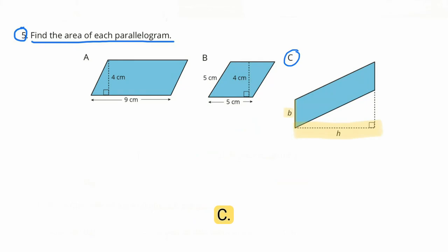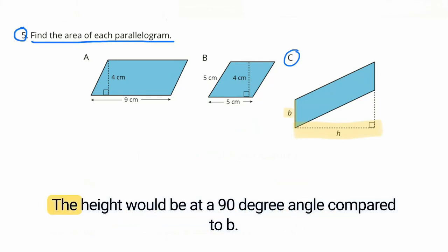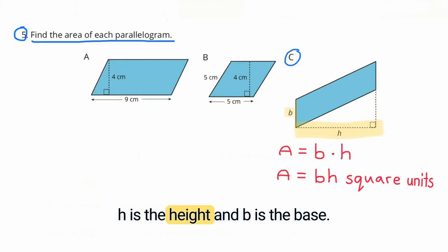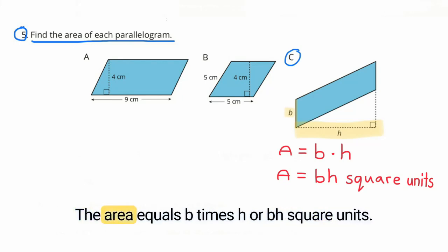C: They've identified the base as B. The height would be at a 90-degree angle compared to B. H is the height and B is the base. Base times height equals the area, so the area equals B times H, or BH, square units.